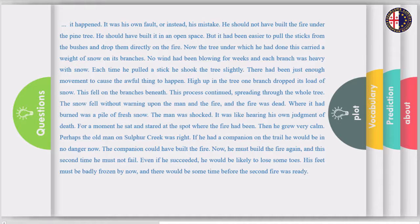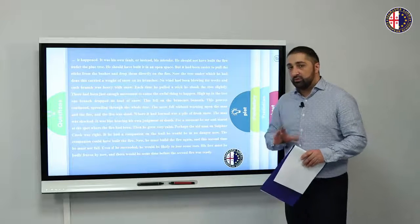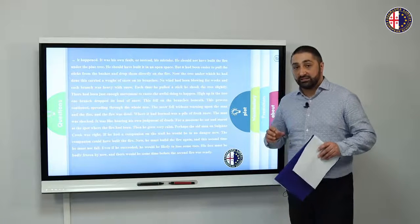'Where it had burned was a pile of fresh snow. The man was shocked — it was like hearing his own judgment of death. For a moment he sat and stared at the spot where the fire had been. Then he grew very calm. Perhaps the old man on Sulfur Creek was right. If he had a companion on the trail, he would be in no danger now. Now he must build the fire again, and the second time he must not fail. Even if he succeeded, he would likely lose some toes.' So as we can see, this is the culmination part of the story, which is very exciting and tense for the readers.